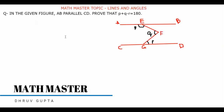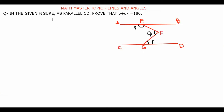The question of the day is: in the given figure, AB is parallel to CD, then we have to prove that p plus q minus r is equal to 180 degrees. A figure is given to us in which AB and CD are the two parallel lines, and we have to prove that p + q - r = 180°.